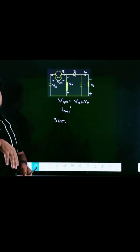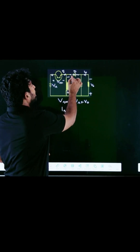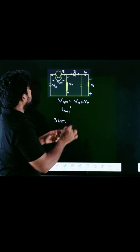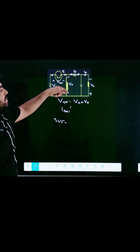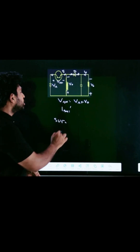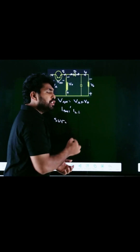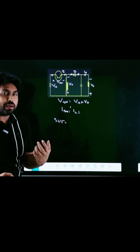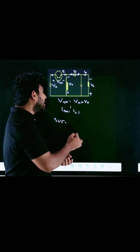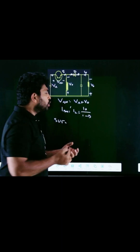To find the current flowing through the switch, the switch should be in the on condition and the diode should be in the off condition. In that case, the inductor current equals the switch current, which is equal to IL. In the buck-boost converter, IL equals I0 divided by (1 minus D).